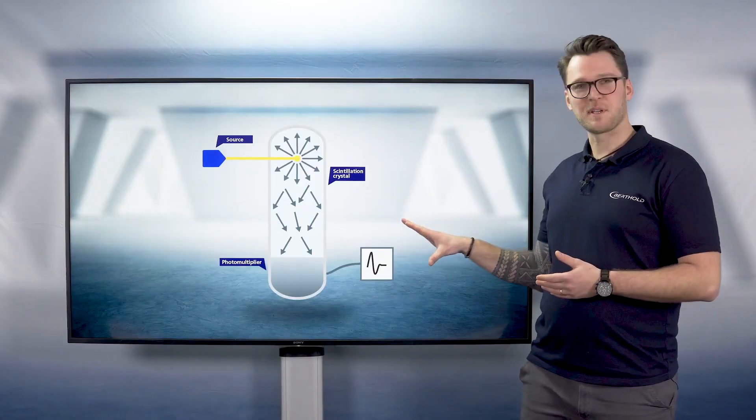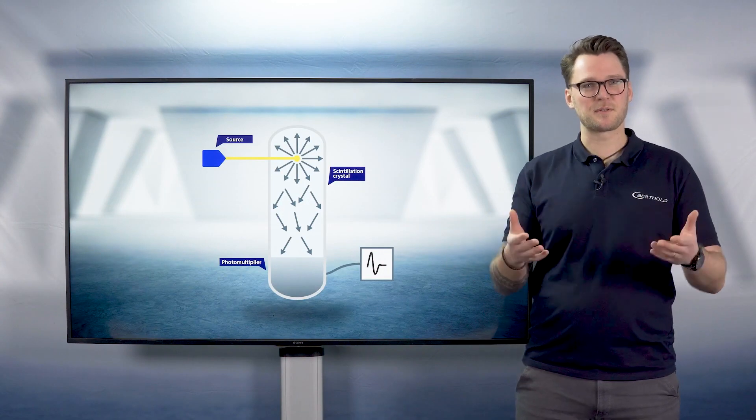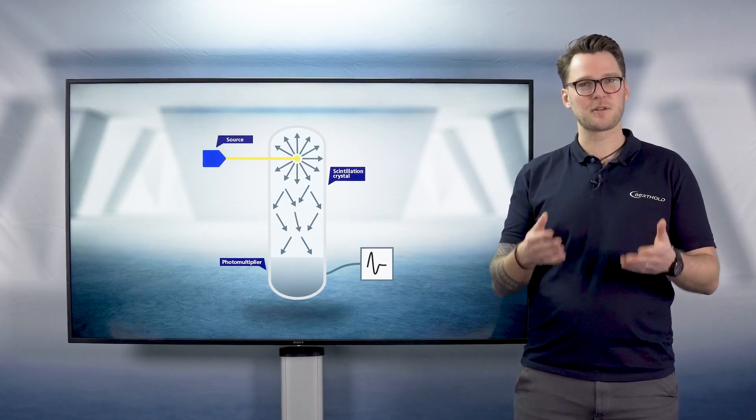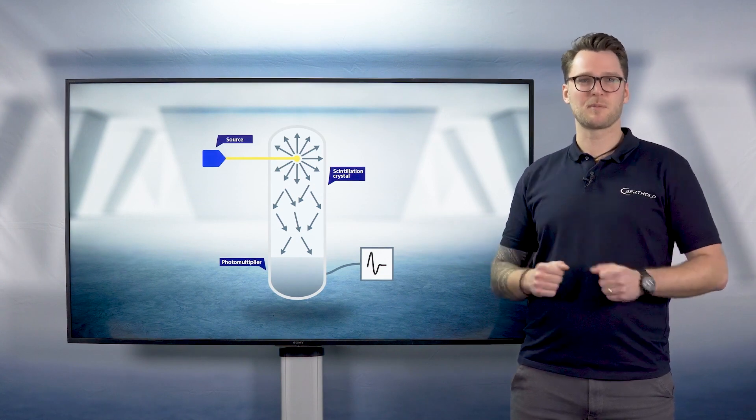This analog signal can then be used by your DCS, your control system, or your PLC, your logic controller, for better automation of your process.